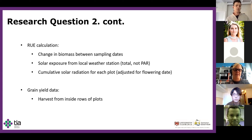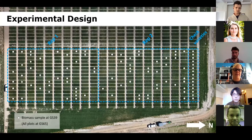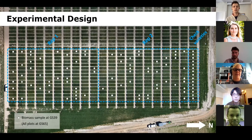Radiation use efficiency for the period between sampling dates was calculated using the change in above-ground dry matter and the cumulative solar radiation exposure for each plot, adjusted for flowering date. Grain yield was taken using all rows of the plot excluding outside rows to reduce edge effects. The white circles in the diagram indicate the 91 plots for which I completed biomass sampling during my first visit, and biomass cuts were taken for all plots at anthesis plus seven days — some by me, but most by CSIRO staff.